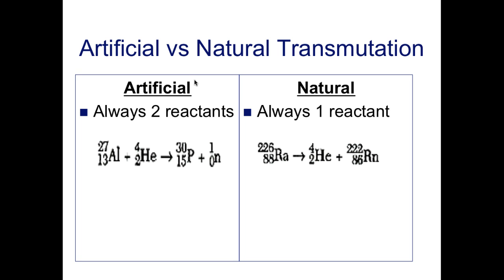When we look at the difference between artificial and natural transmutation, artificial transmutation is always going to have two reactants. The reactants are the things on the left side of your arrow sign in an equation. In this artificial example, we have two reactants. The aluminum nucleus is one reactant, and the helium nucleus is the other one. That's how we know this is artificial transmutation.